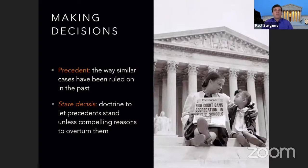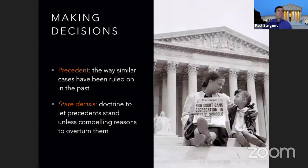This leads to the court practice of stare decisis — a Latin term meaning to let the precedent stand unless there are compelling reasons to overturn it. Unless something has radically changed, or the decision was obviously outdated or wrong, you don't overturn the decision — especially at the Supreme Court level.